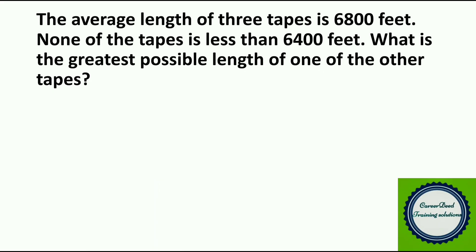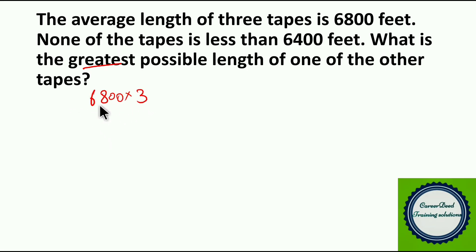The average length of 3 tapes is 6800 feet. None of the tapes is less than 6400 feet. What is the greatest possible length of one of the other 2 tapes? We totally have 3 tapes and the average length of these 3 tapes is 6800. Then the total length will be 6800 into 3, we get 20,400 feet.